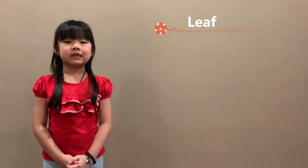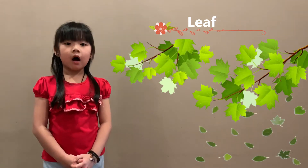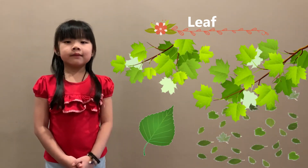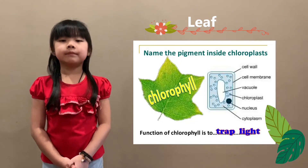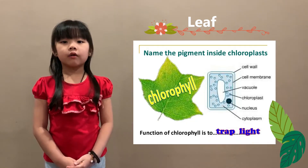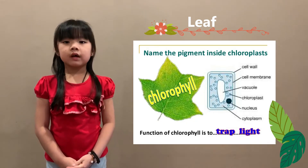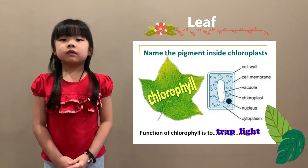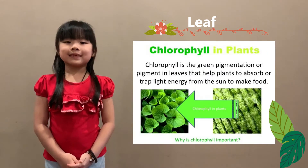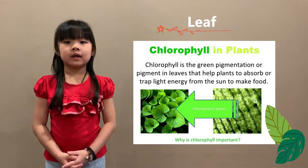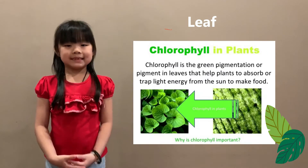Now leaf. Leaf is the most important part of the plant. Leaf has the green pigment cell called corpheal. It will absorb the sunlight and make fruit for the plants.